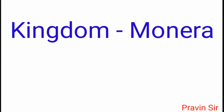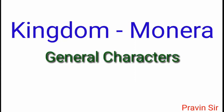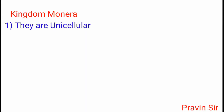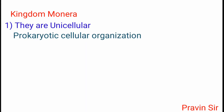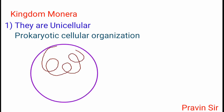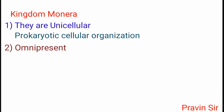Hello students, today I will explain you about the general characters of Kingdom Monera. Kingdom Monera is the first kingdom in five kingdom classification. They are unicellular organisms with prokaryotic cellular organization, meaning it is made up of a single cell and the nucleus is not well developed.